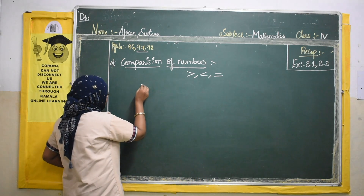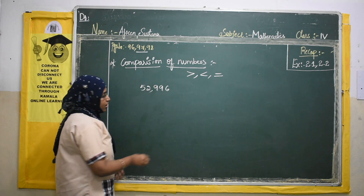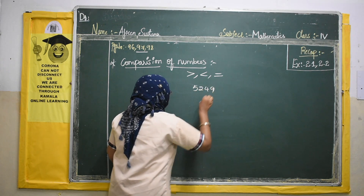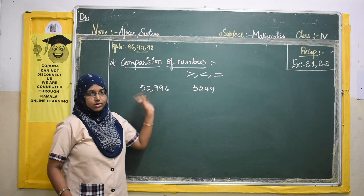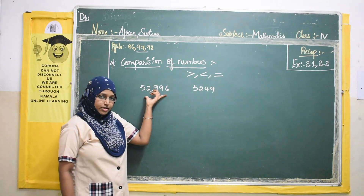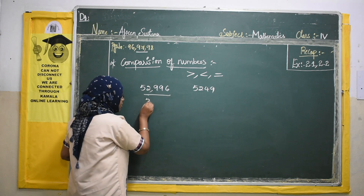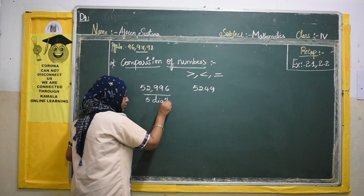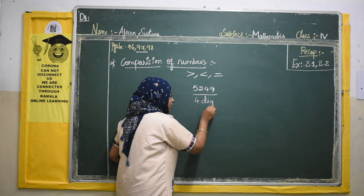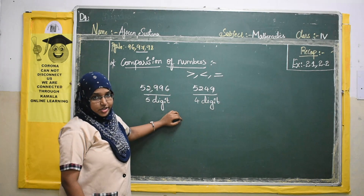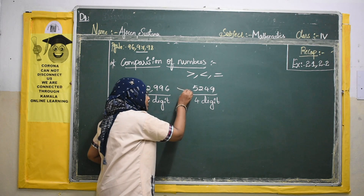Suppose they give us two numbers: one is a 5-digit number and another is a 4-digit number. We have to compare which is the greatest and which is the smallest. Simply check how many digits each number has. If one number has 5 digits and the other has 4 digits, the 5-digit number is greater. Any number with more digits is greater. So we place the greater-than symbol between them: the 5-digit number is greater than the 4-digit number.